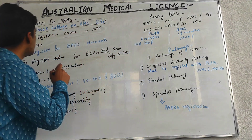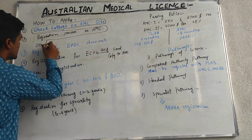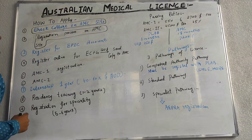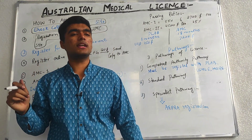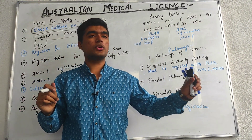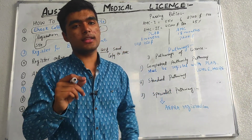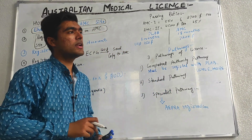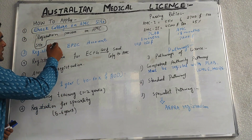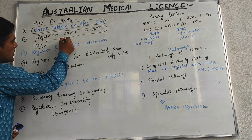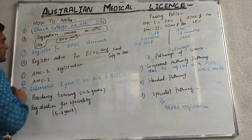The second step is registration on the AMC site. You have to visit the AMC site, click the register option, and complete your registration. This registration costs approximately 500 Australian dollars.